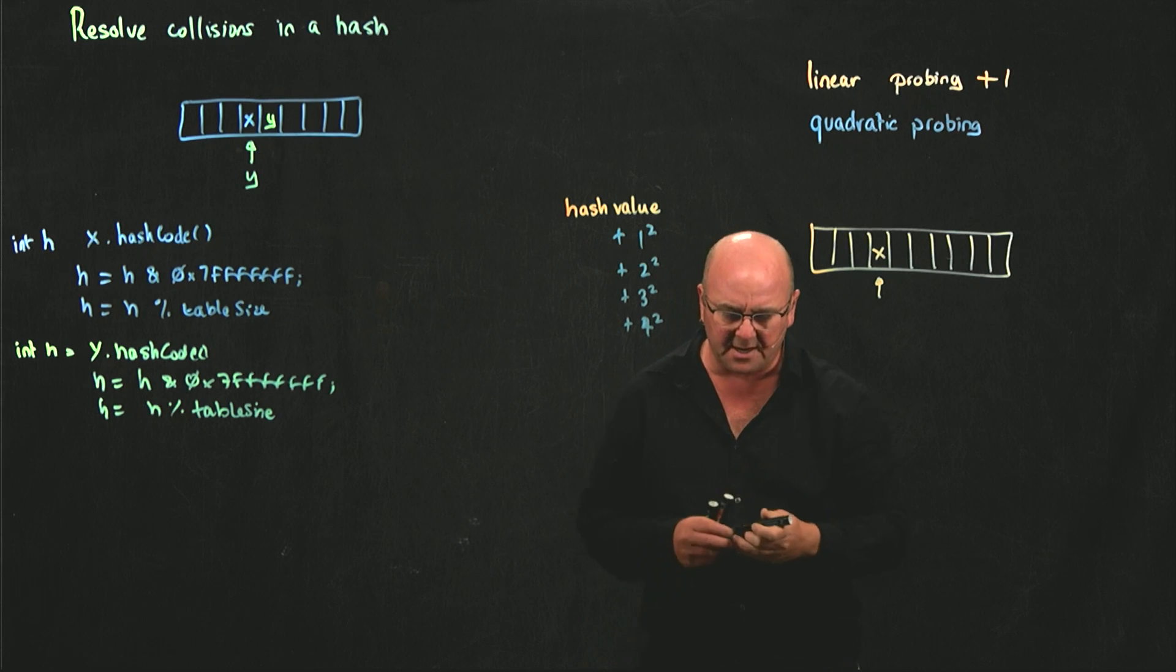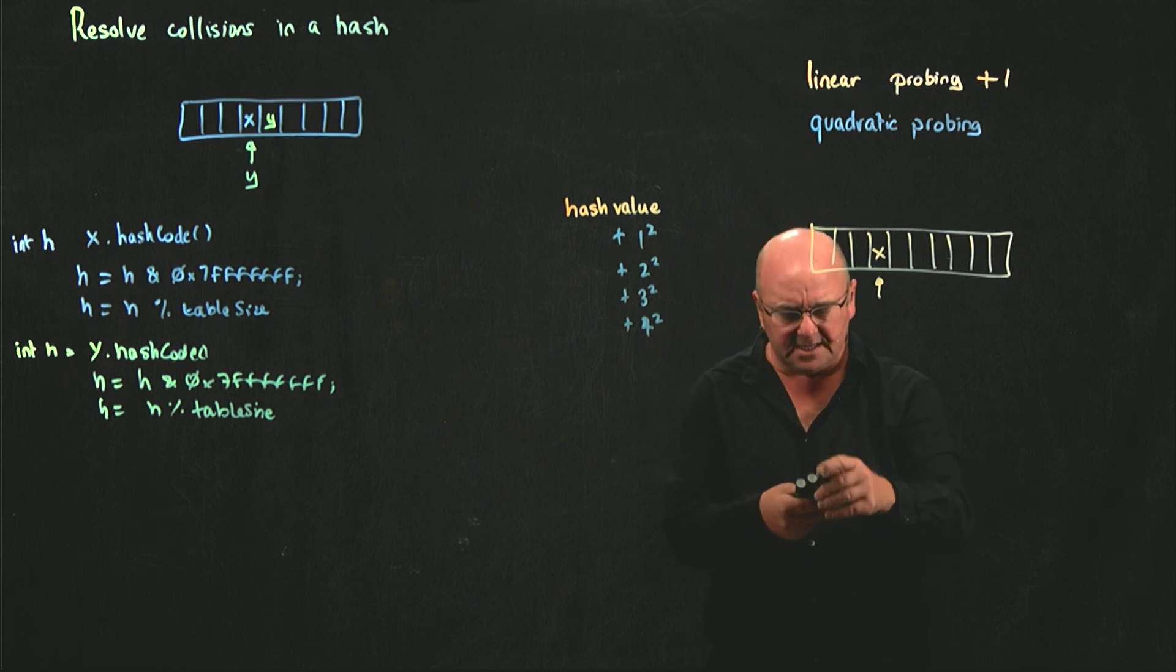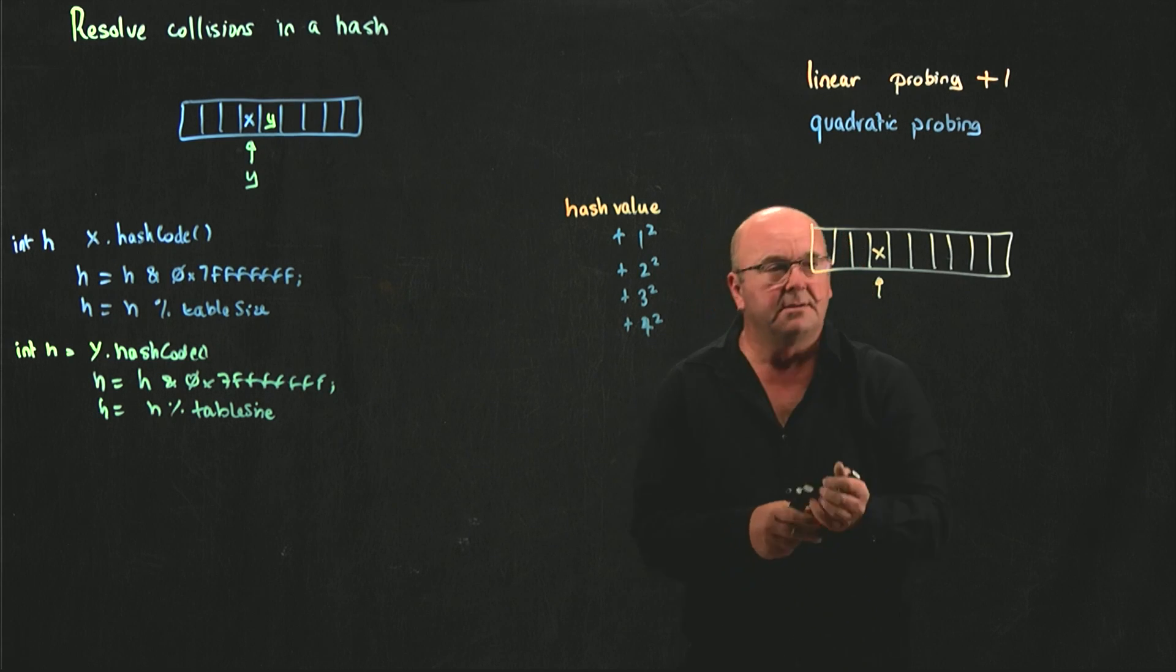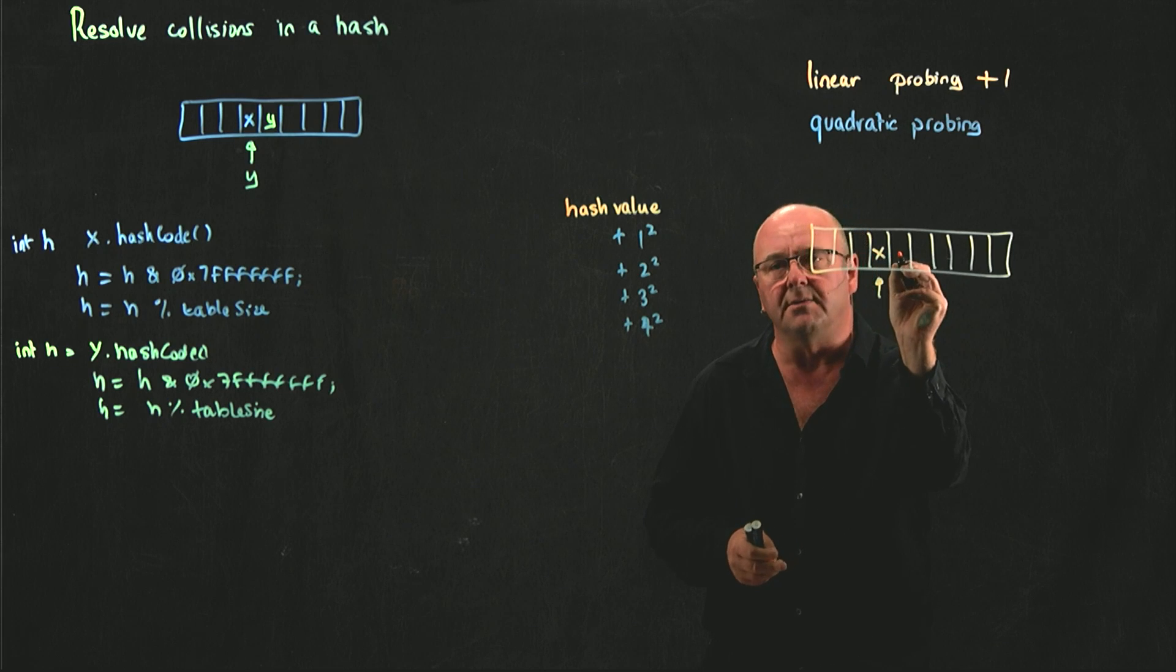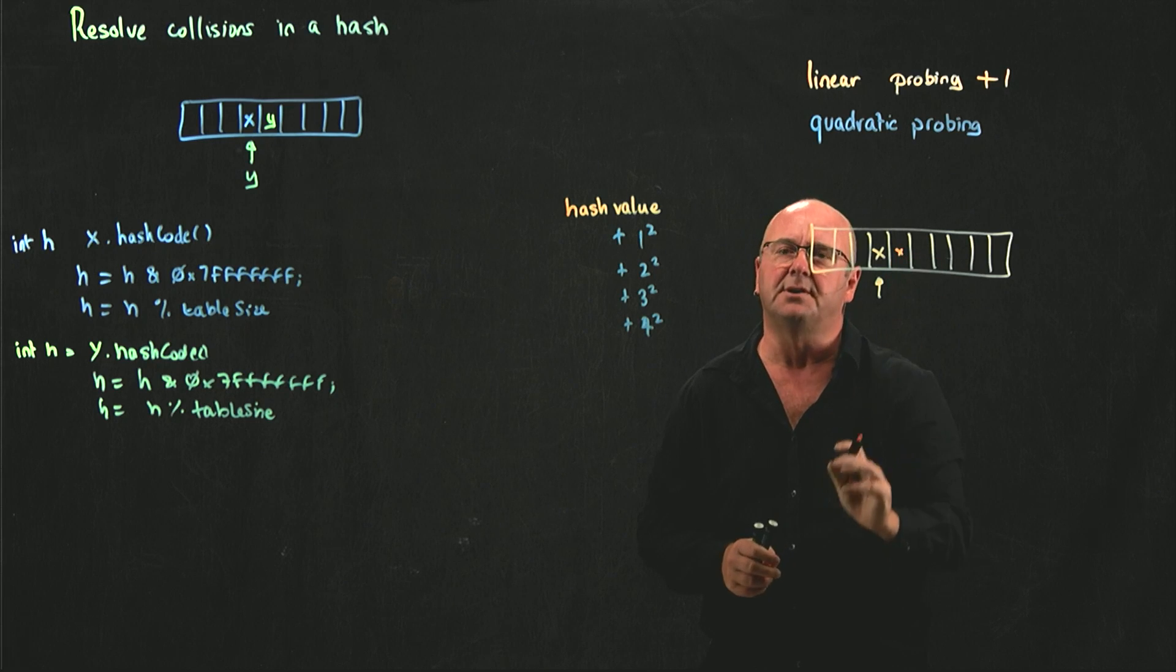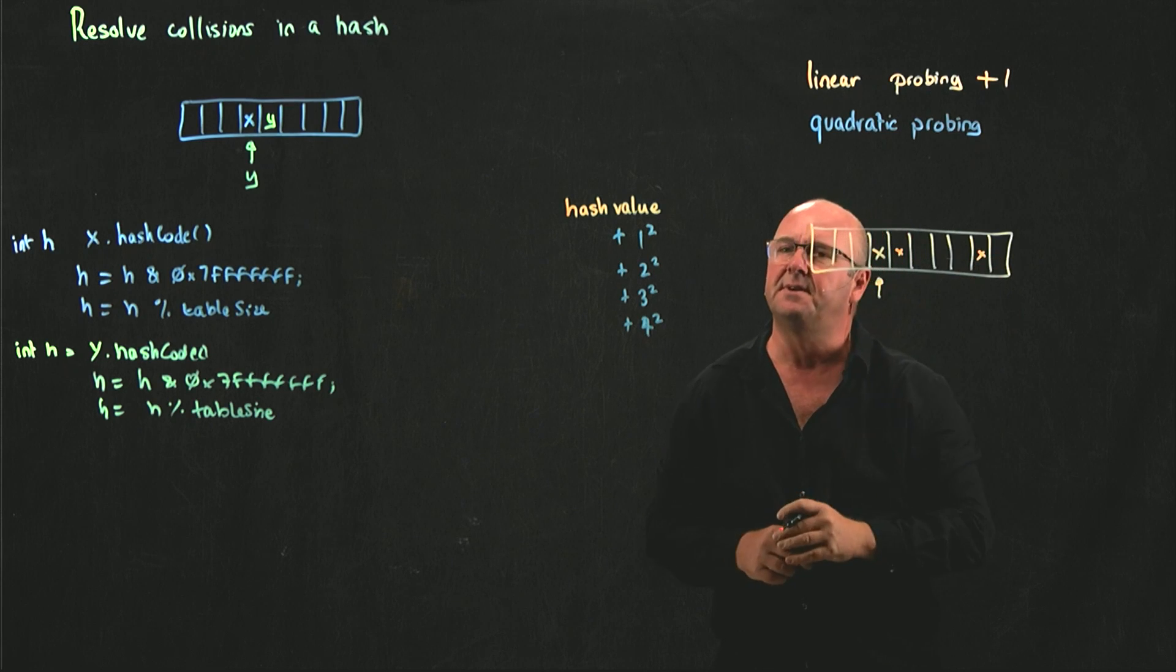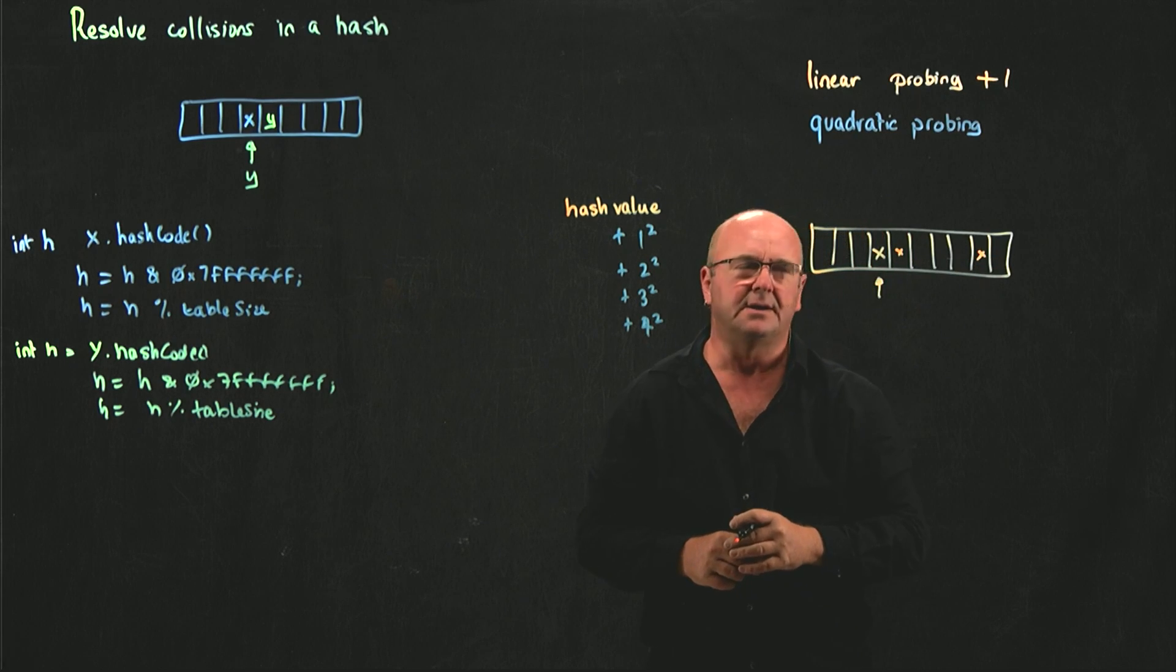If we're having a quadratic probing, that's using squares. And the idea here is that we're not going to be adding the first one, one squared, we'll add to the immediately adjacent spot, but then we're going to try and jump away and add something further away in our data structure.